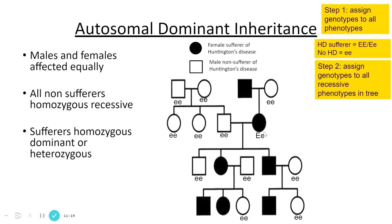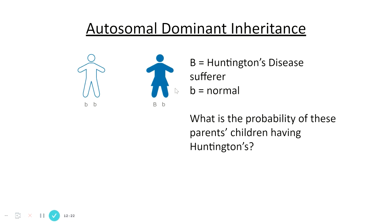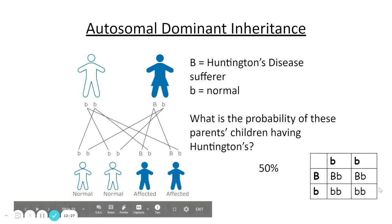In an autosomal dominant pedigree, someone is heterozygous if they must have received the recessive allele from mum but also have the condition, meaning dad gave the dominant allele. However, from one person alone we cannot determine what the father's full genotype is. For a Punnett square asking the probability of these parents having a child with Huntington's, you work out a one to one ratio — so a 50% chance.